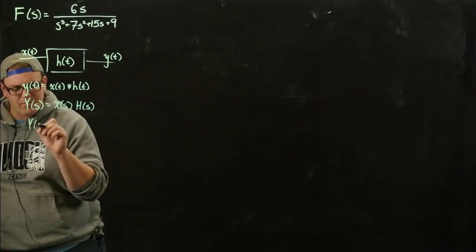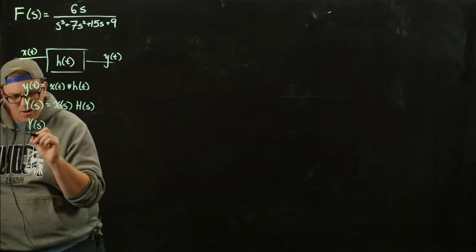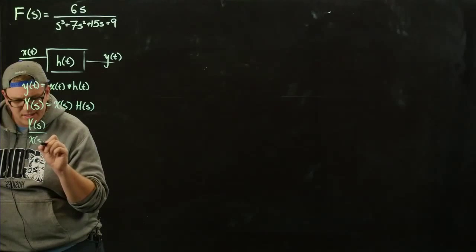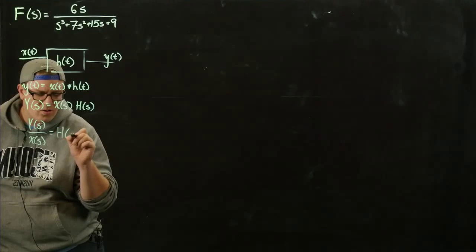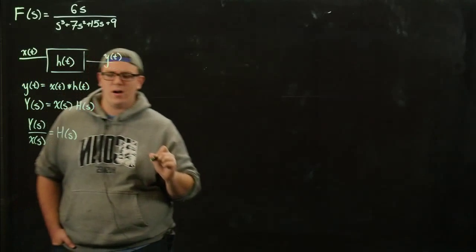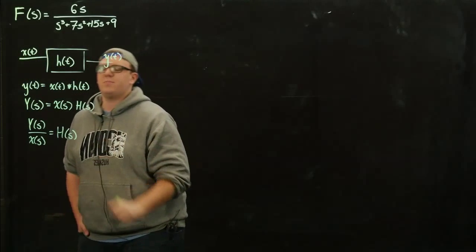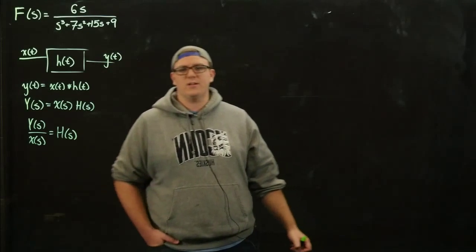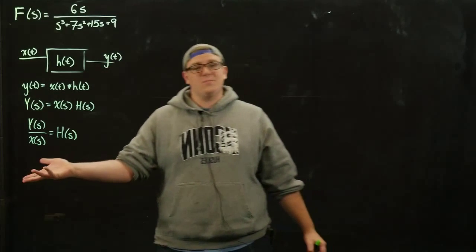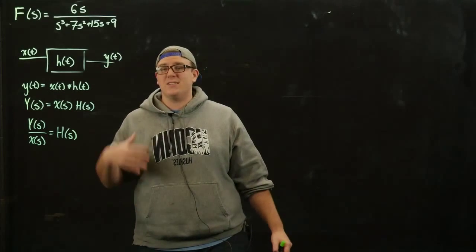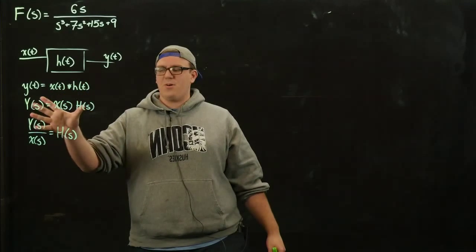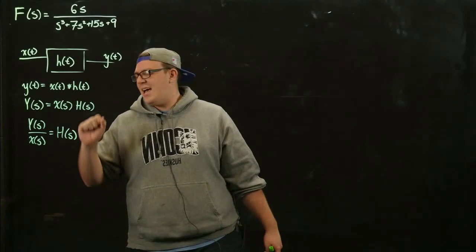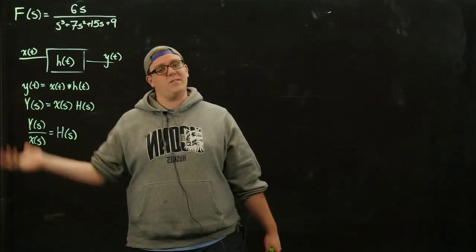Convolution in the time domain goes to multiplication in the Laplace domain. And if you divide, you get your input-output relation: y of s over x of s equals your Laplace transform of your impulse response, which we call the transfer function. Laplace transforms are useful because if you just convert to this domain, it's a multiplication instead of an integral, and then you can just convert back.